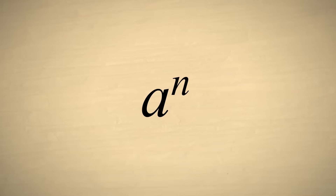To write a raised to the nth power, we write the number a, which is called the base, with a small superscript n, which is called the exponent. This forms an exponential expression.